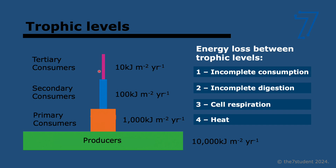Why only 10%? There's large energy loss between trophic levels due to four main reasons. First, incomplete consumption — we don't eat everything; for example, we don't eat the bones in chicken. Second, incomplete digestion — some parts are eaten but cannot be digested, such as the very fibrous parts of plants like the outer layers of an artichoke, which contain a lot of cellulose.